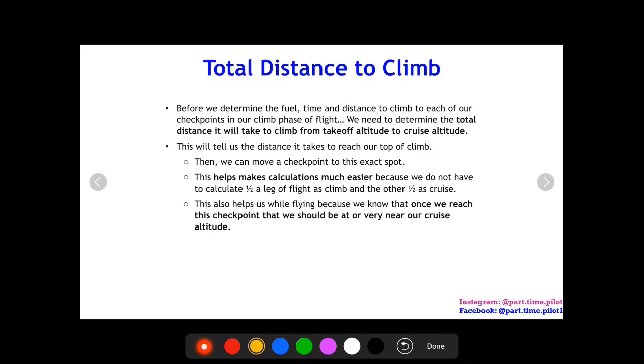Then while we're flying, it's going to help us because we know when we're at this checkpoint that we should be at the top of our climb. Always good to have those little bits of data points when you're flying on a cross-country. So the first thing we got to do is we got to gather the information for our fuel, time, and distance to climb chart.